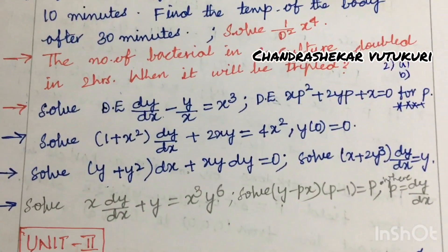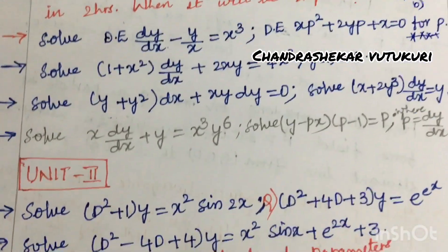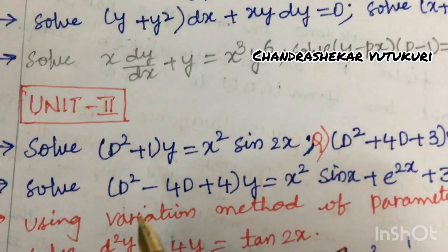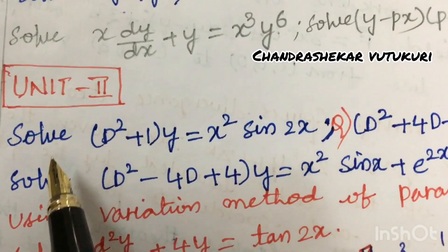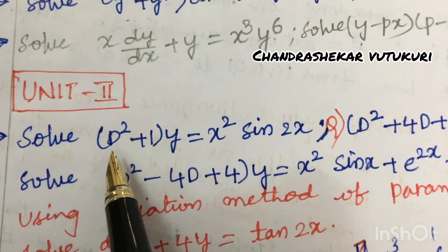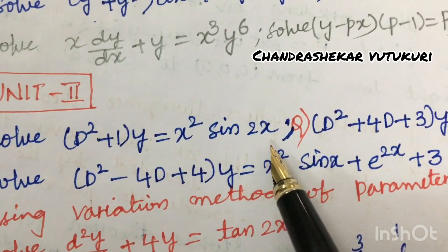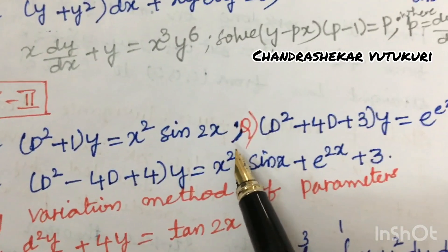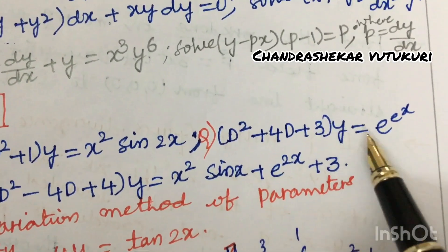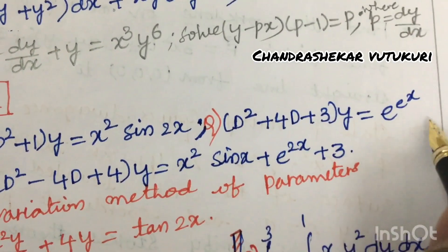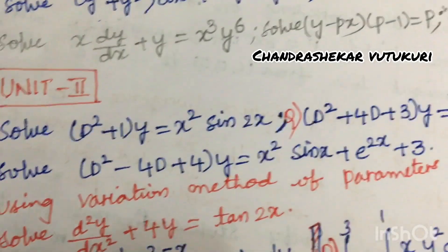As per the COVID exam pattern, from every unit — units 1, 2, and 3 — you are going to get 2 questions each, so 6 questions will be covered from the first 3 units. Solve (D² + 1)y = x² sin 2x or (D² + 4D + 3)y = eˣ — this is said to be a very important repeated question.